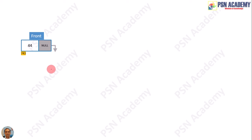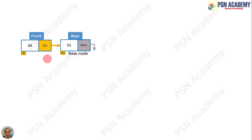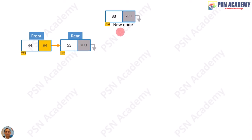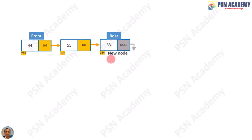In a conventional queue, we have a front pointer pointing to the node at the start, and if a new node gets inserted, it gets attached next to the existing last node in the list. So we have a rear pointer pointing to the last node in the list. In a conventional queue, every time a new item gets inserted, that node is attached to the last node in the existing queue.